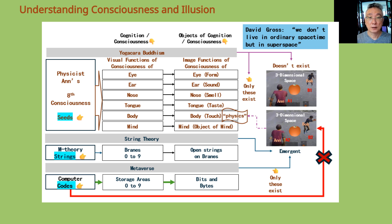Our ability to see is when a seed is activated, it kickstarts eye consciousness, which splits into a visual function of eye and image function of eye. The visual function of eye then interacts with the image function of eye. All these happen outside of three-dimensional space-time, including the objects, or matter, or physics.